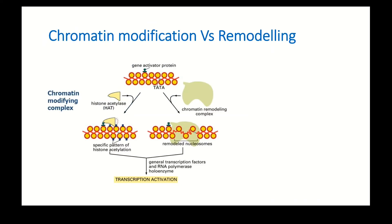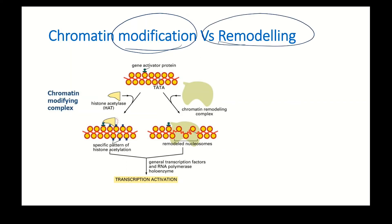Post-translational modification of histones is known as chromatin modification. There is another term — chromatin remodeling — and these two are different. Chromatin modification leads to chromatin remodeling. Chromatin remodeling uses ATP to physically move the nucleosome. Chromatin modification is the chemical modification of amino acid residues of histones.